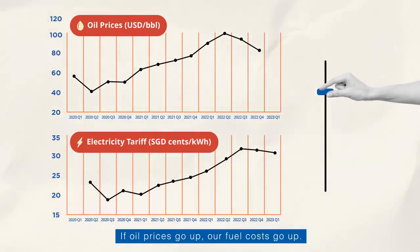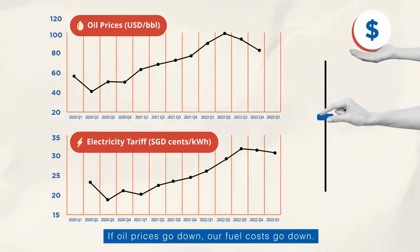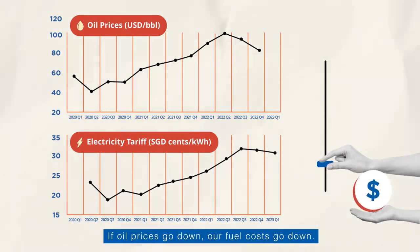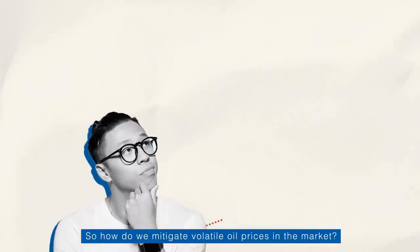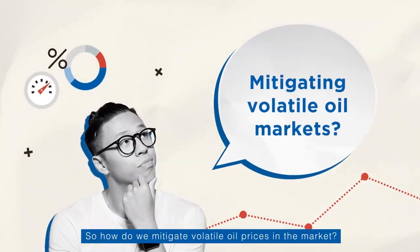If oil prices go up, our fuel costs go up. If oil prices go down, our fuel costs go down. So how do we mitigate volatile oil prices in the market?